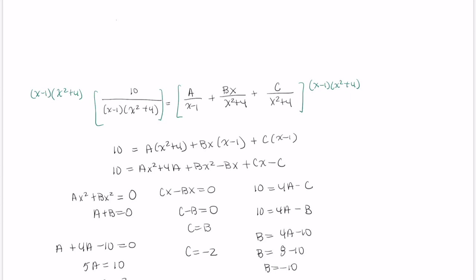What we have just done is shown that 10 divided by x minus 1 times x squared plus 4 is equal to 2 over x minus 1 minus 2x over x squared plus 4 minus 2 over x squared plus 4.